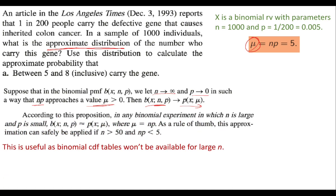There is a thumb rule which says it's better to approximate when n is greater than 50 and np is less than 5. The idea behind approximating is that the binomial CDF table won't work for very large n because of very heavy computation.